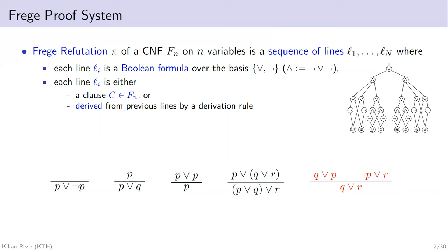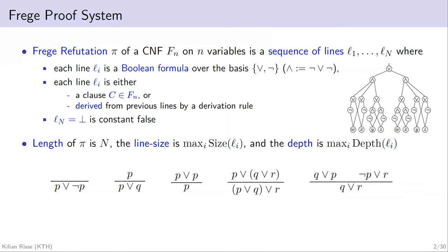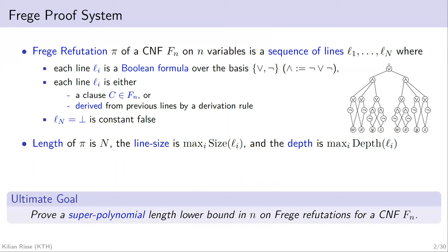The basis we choose is not that important. The goal is in the end to derive the constant false, because since these rules are sound, we see that the CNF is unsatisfiable. Some terminology: the length is the number of lines in the proof; the line size is the maximum size of any formula occurring in the proof; and the depth of the proof is the maximum depth of any formula — meaning we count the number of alternations in ORs and NOTs.